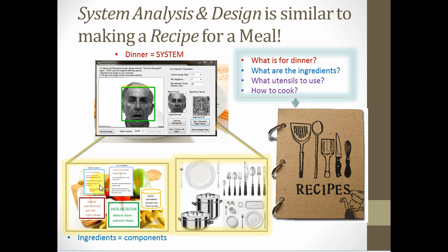So our ingredients are actually components. For a face recognition system, for example, they could be the face detector, faces database, image acquisition component, some component that recognizes the faces, and some component that manages the database. When you decide on the components for a system, you're still lacking one thing — what actually allows you to interact with whatever system you're making. Just as we needed utensils to work on our ingredients, we need user interface tools to interact with our components.